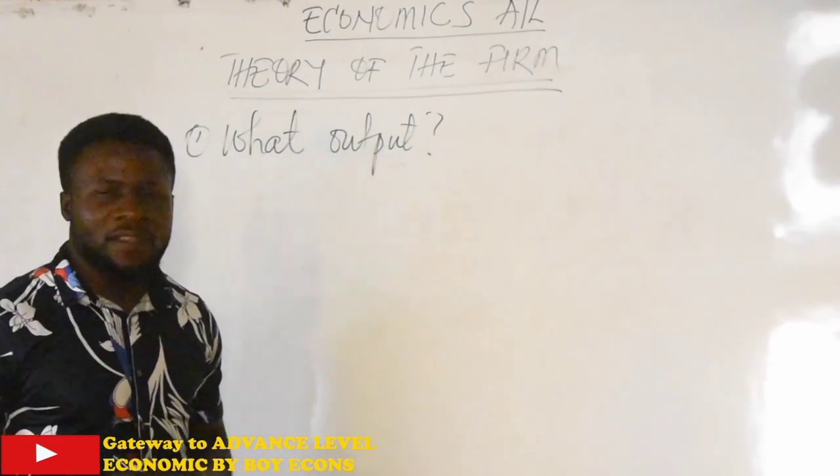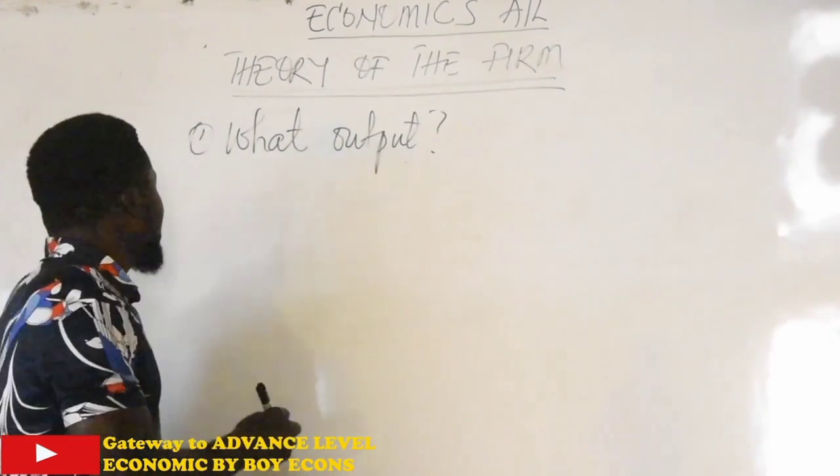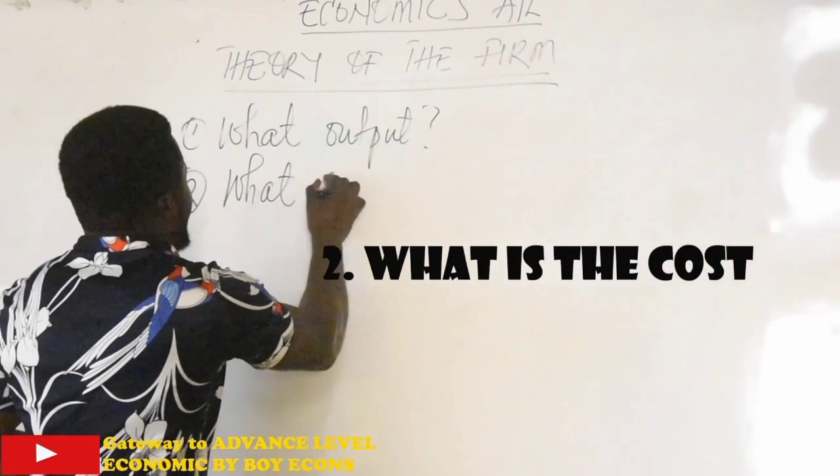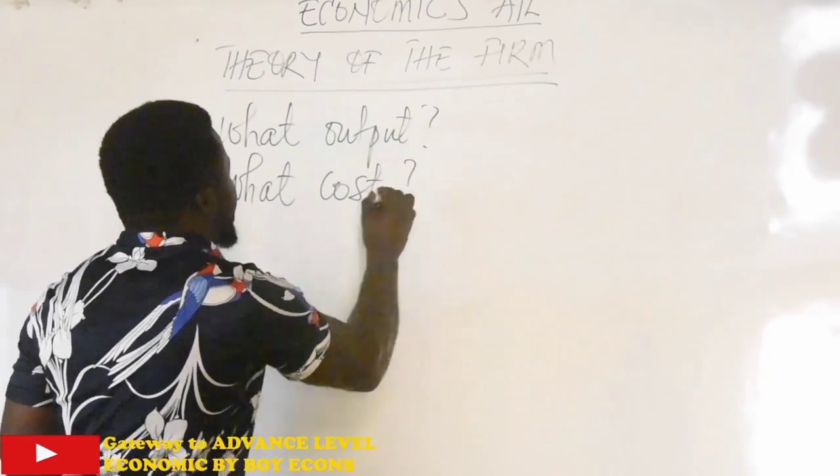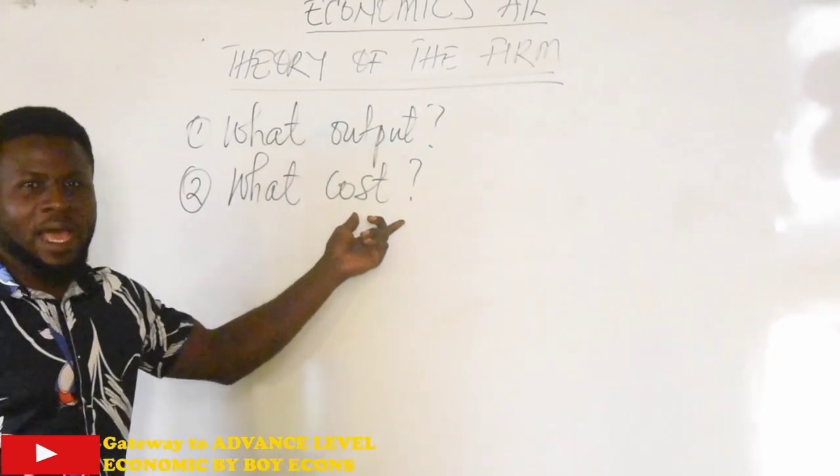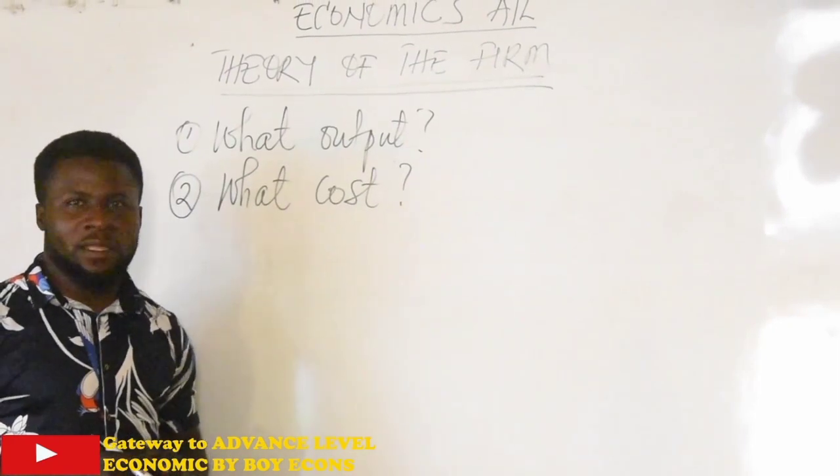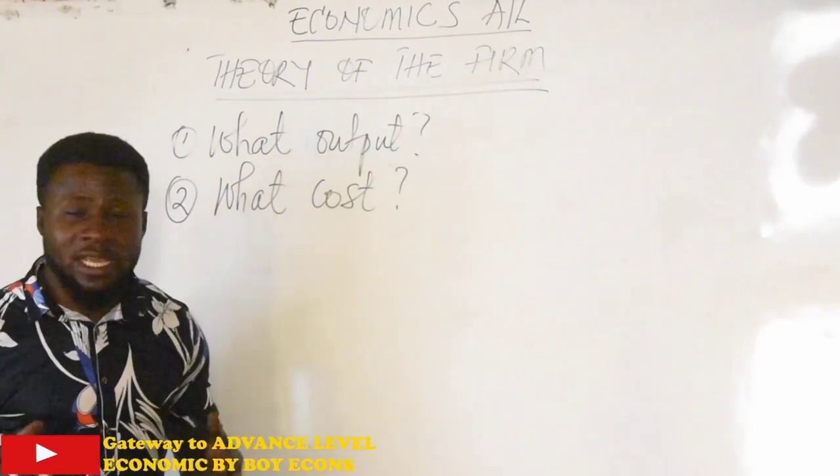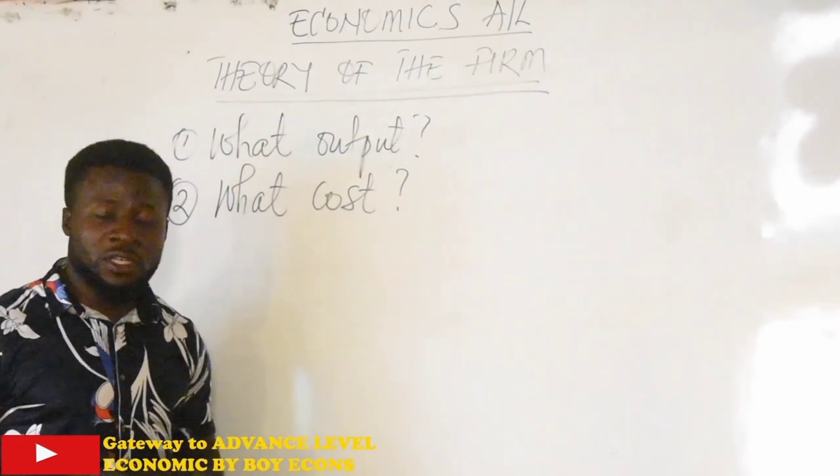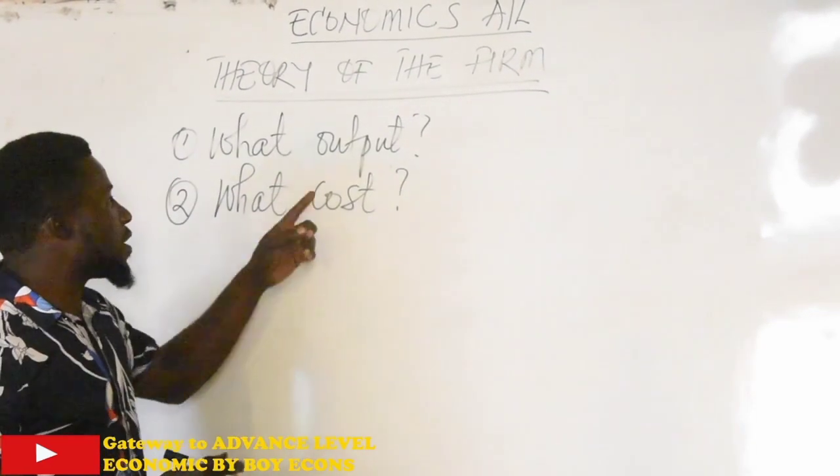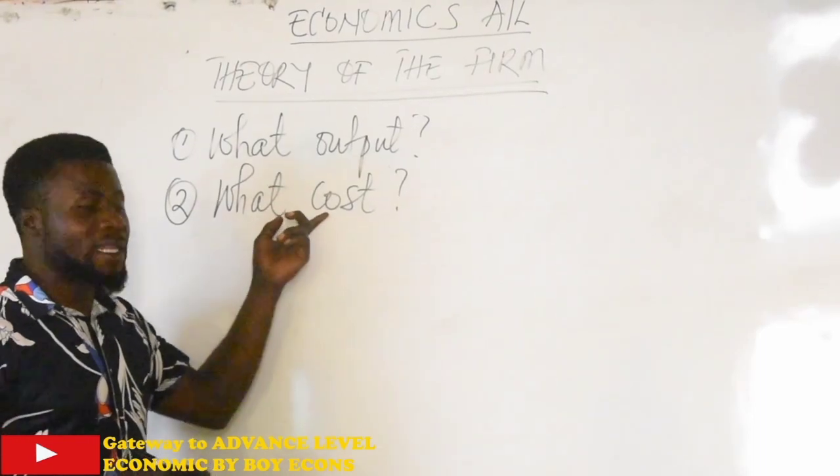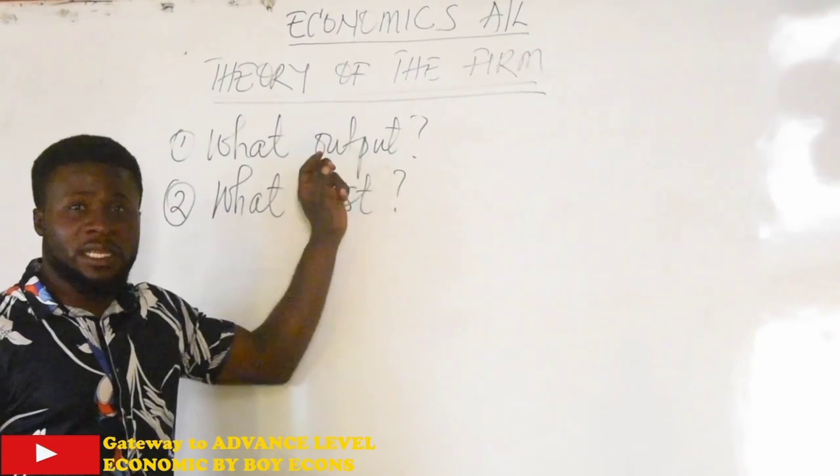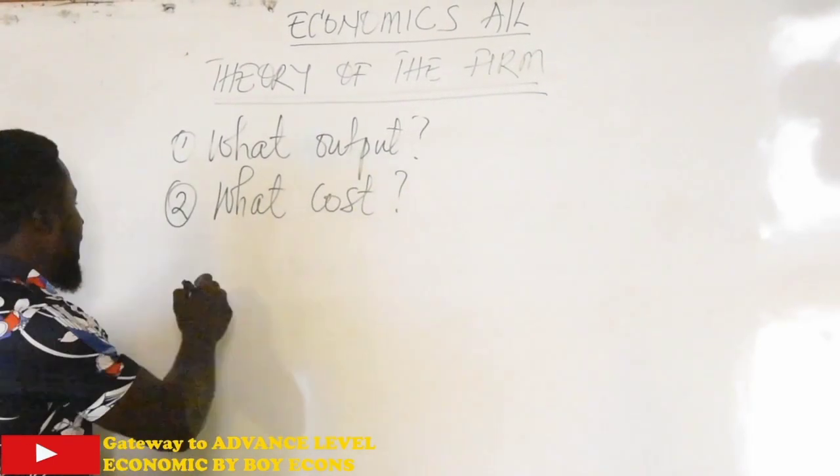The next question after you must have sorted out your output you should produce is what is the cost? What is your cost of production? How much will this output cost you? That output you already determined. How much will this output cost? Should I produce 10,000 cartons of bread? Should I produce 1 carton? Should I produce 50 cartons? After you have decided on the output, then the next question is how much will it cost you to produce the already determined output?